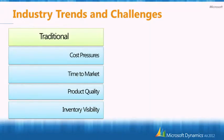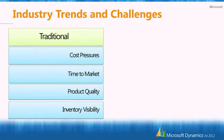Let me share with you some of the trends we see. You would realize that manufacturing industry is a mature industry — it has existed for quite a long time. There have been four traditional challenges that the manufacturing industry has faced: cost pressures on producing cheaper quality products, time to market, how fast we can bring the product to market, product quality, and inventory visibility.